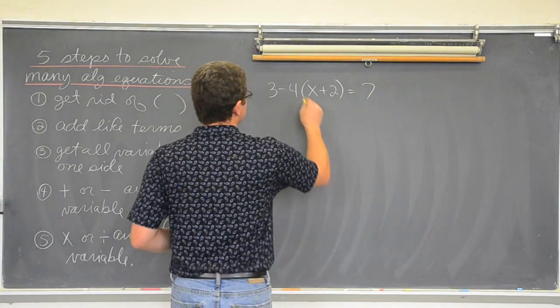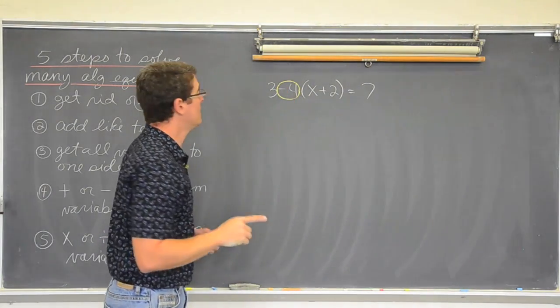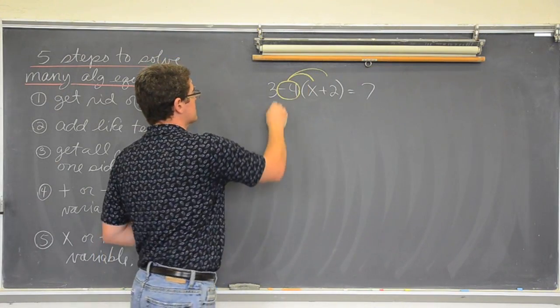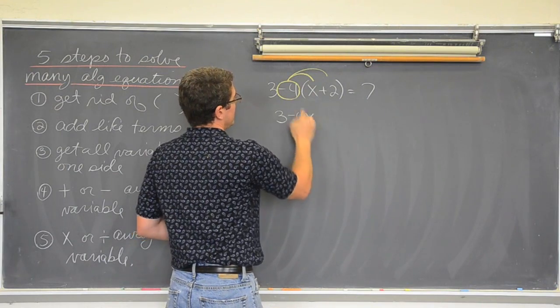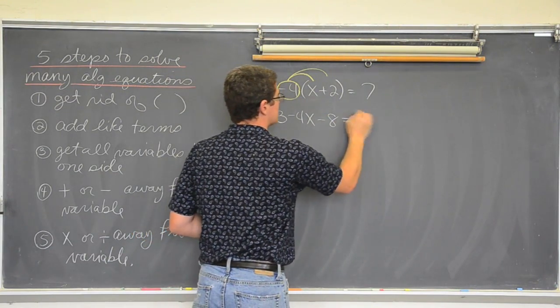You are going to do that by taking the number that is right in front of the parenthesis, touching it, and multiplying or distributing it through the parenthesis. It is going to look like this. 3, negative 4 times 1 is negative 4x, and negative 4 times positive 2 is negative 8 equals 7.